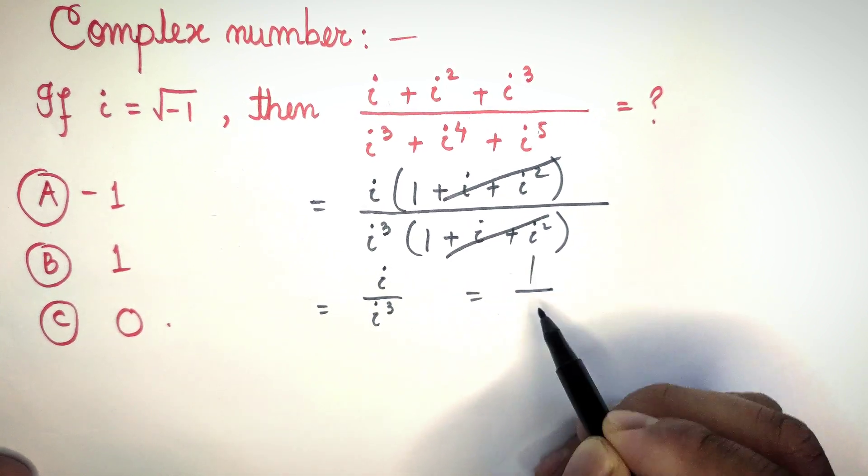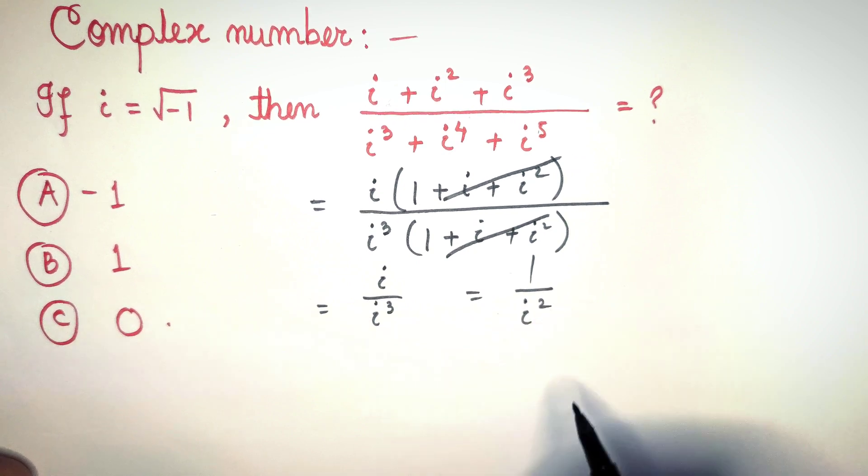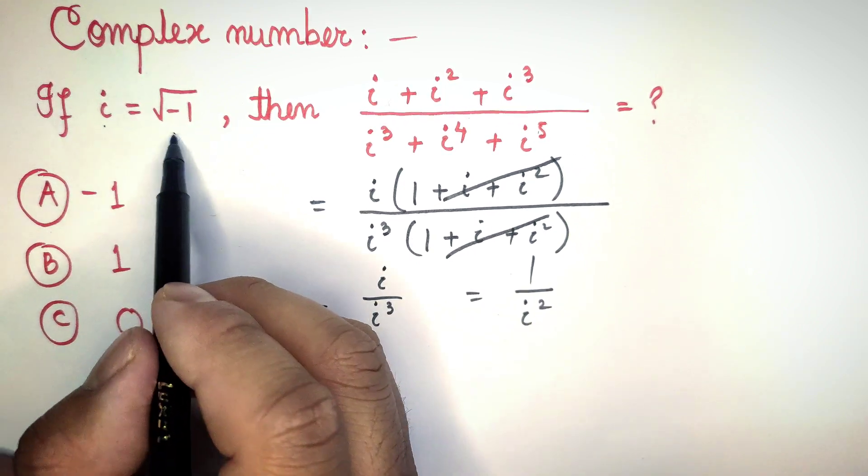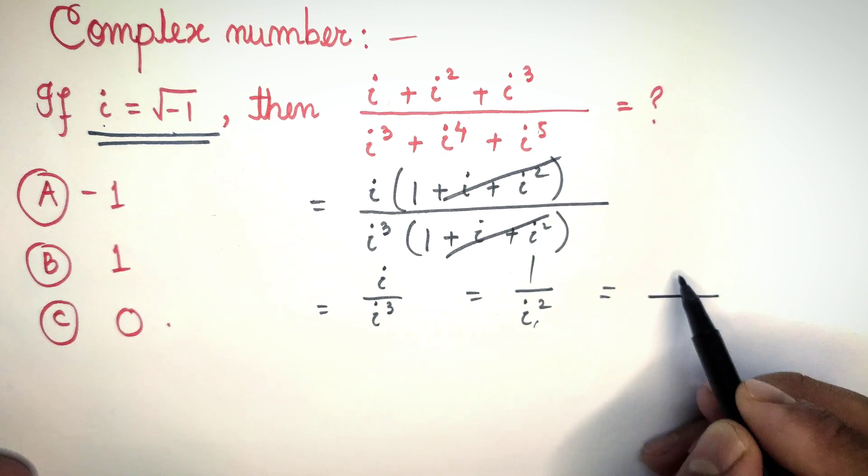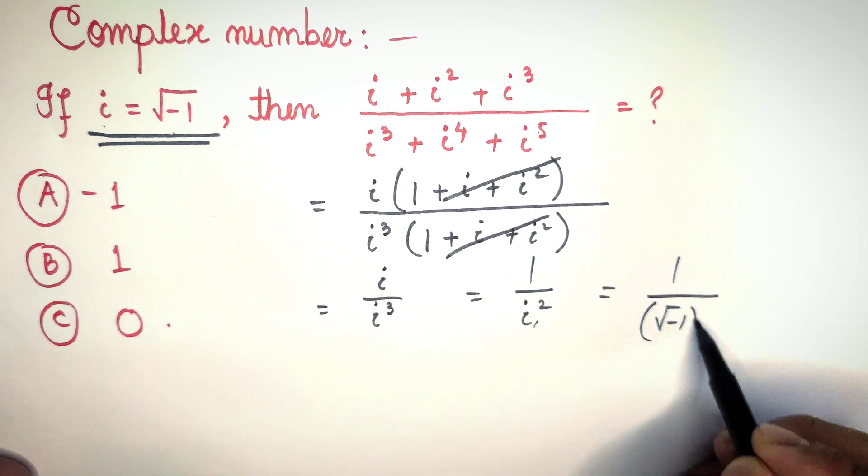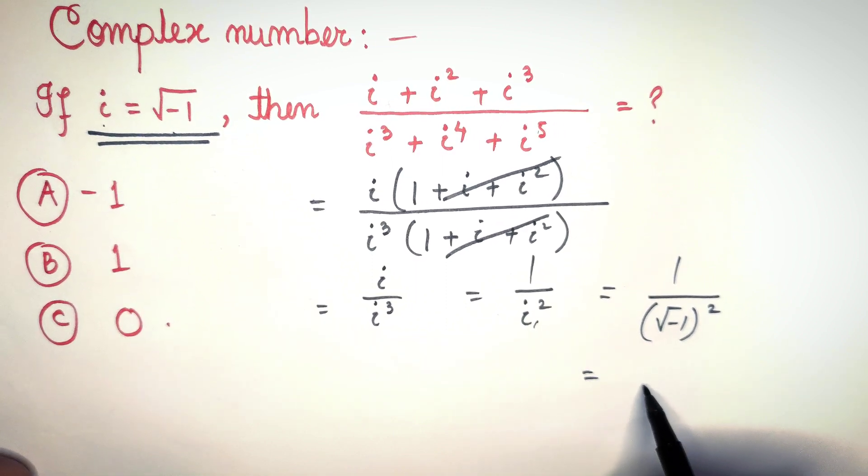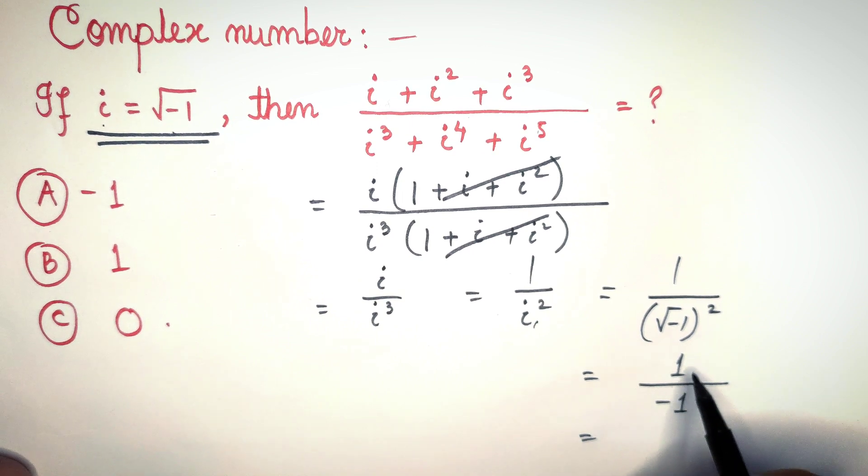Putting the value of i here, we get one by root over minus one whole squared. Here we get one divided by minus one.